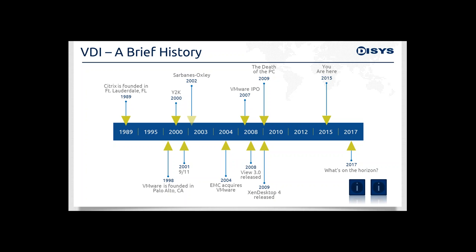Fast forward to 2002 and Sarbanes-Oxley — legislation that was all about data: who had it, where it was stored, and how it was secured. The idea that a DOD laptop with 150,000 social security numbers left in the backseat of a taxi could impact your IT strategy was very real. It began to sink in quickly that centrally managed, secure, remote virtual desktops were the future. Which is why in 2004, EMC, a storage company, acquired VMware.